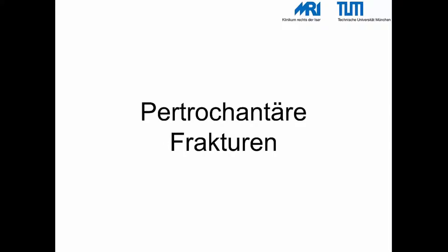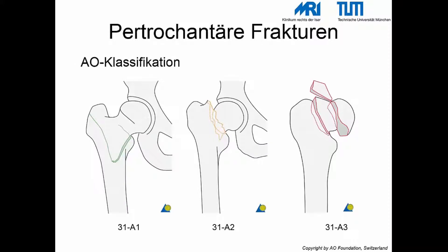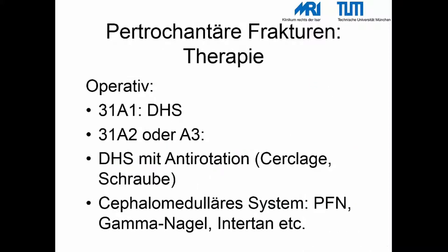Pertrochantäre Femurfrakturen betreffen meist ältere Patienten mit osteoporotisch vorerkrankten Knochen. Als Unfallmechanismus liegt häufig ein direkter Sturz auf die Hüfte zugrunde. Das Bein ist verkürzt und außen rotiert. Für pertrochantäre Frakturen hat sich die AO-Klassifikation durchgesetzt: A1 bezeichnet eine einfache Fraktur, A2 eine mehrfragmentäre Fraktur mit Frakturlinie in 90 Grad zur Krafteinleitungslinie, A3 eine parallele Frakturlinie zur Krafteinleitungslinie. A1-Frakturen lassen sich mittels dynamischer Hüftschraube versorgen; A2- und A3-Frakturen sollten mittels cephalomedulärem System wie proximalem Femurnagel oder Gammanagel stabilisiert werden.